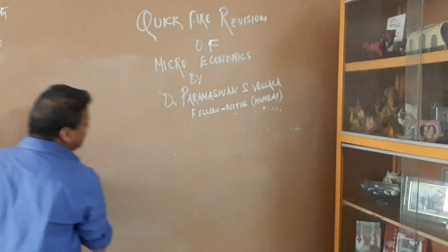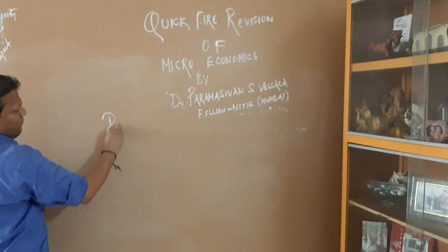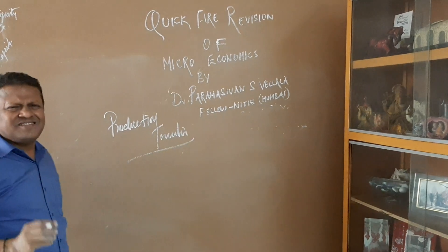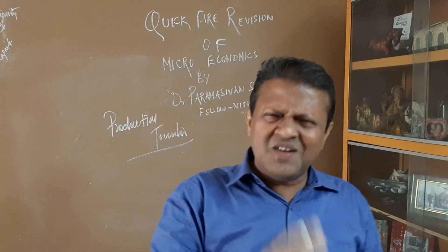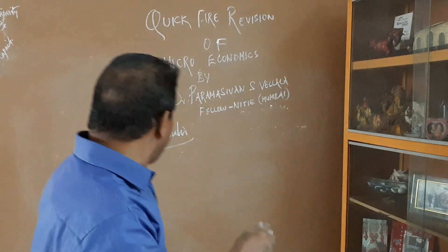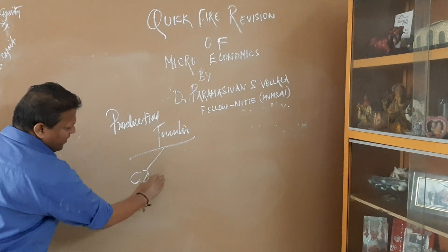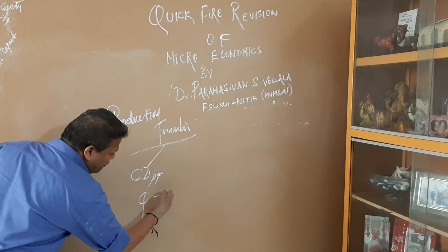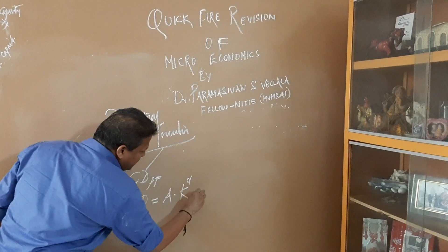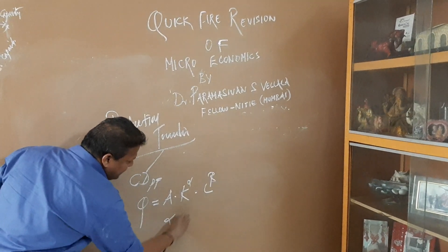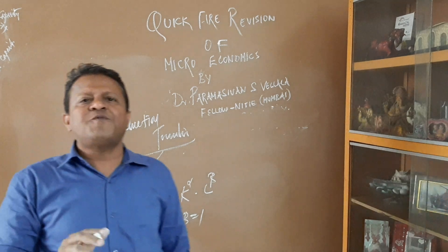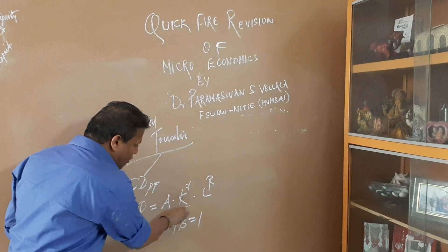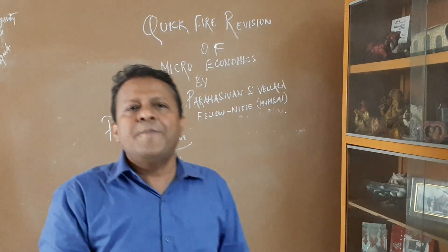Once done with demand, we go to the cost function. Before moving to the cost functions, we study production functions, because the production function explains the functional relationship between the physical quantity of input and the physical quantity of output. The first major one is the Cobb-Douglas production function. Cobb and Douglas did an empirical study, and their finding is Q equals A multiplied by K raised to alpha multiplied by L raised to beta, where alpha plus beta equals 1. The Cobb-Douglas production function is based on the assumption of constant return to scale, and they assumed only two factors — capital and labor — ignoring time.